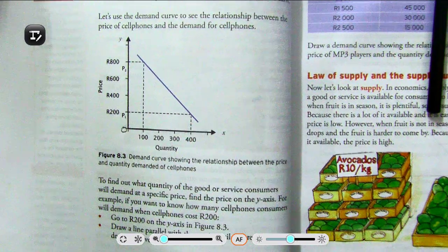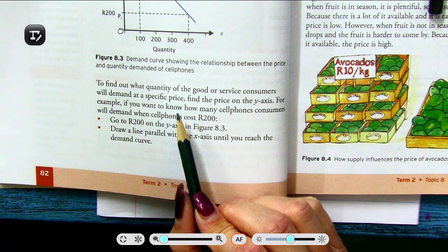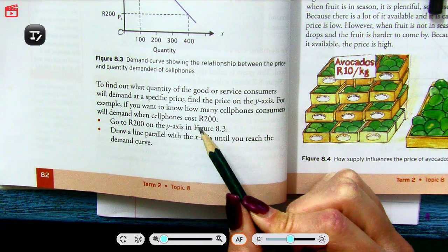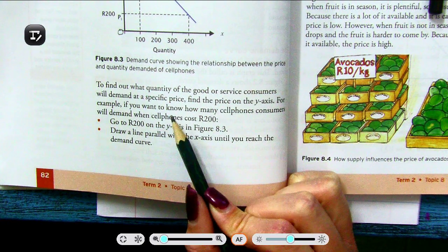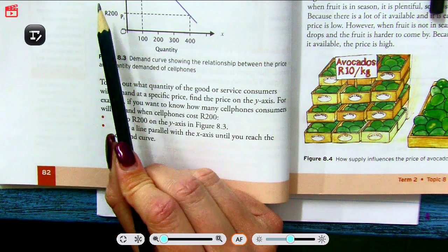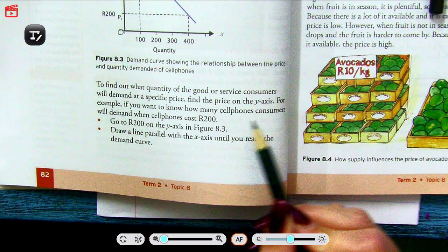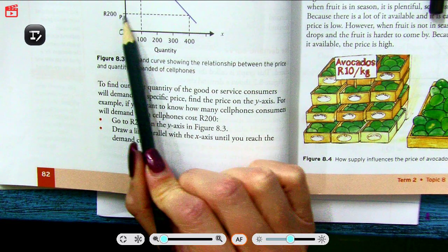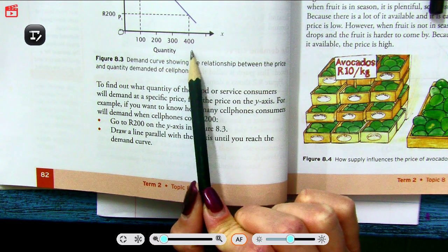So to find out what quantity of a good or service consumers will demand at a specific price, you find the price on the y-axis. For example, if you want to know how many cell phones consumers will demand when cell phones cost 200 rand, we can see that quantity demanded will be 400.